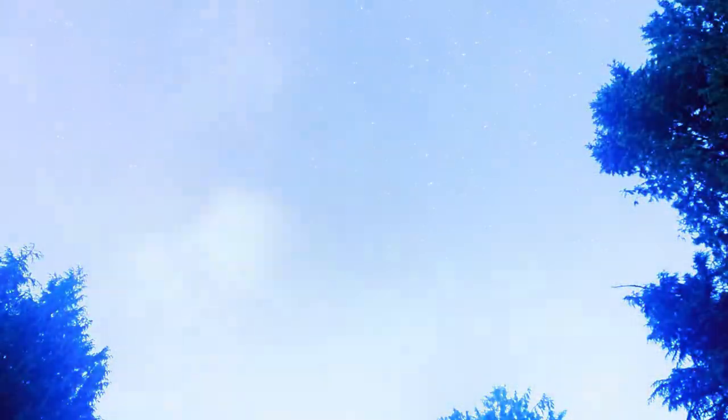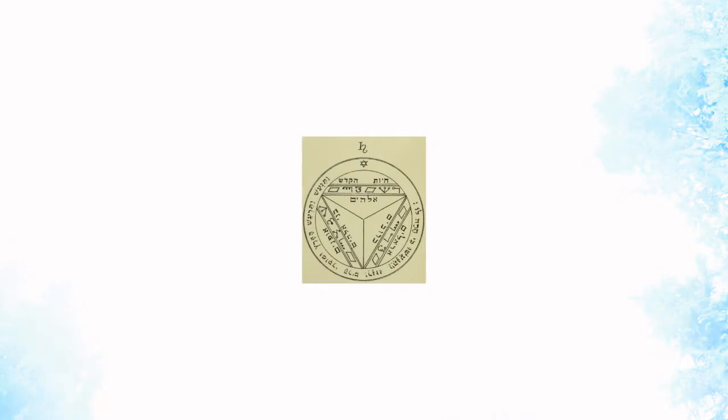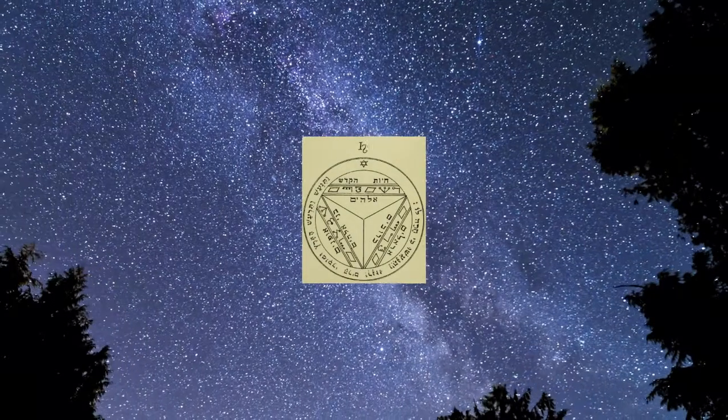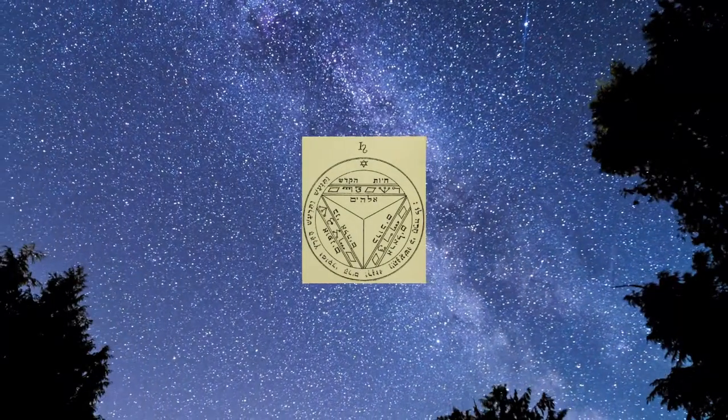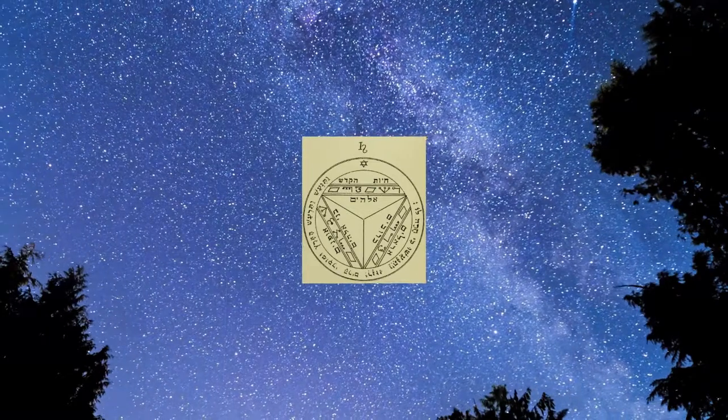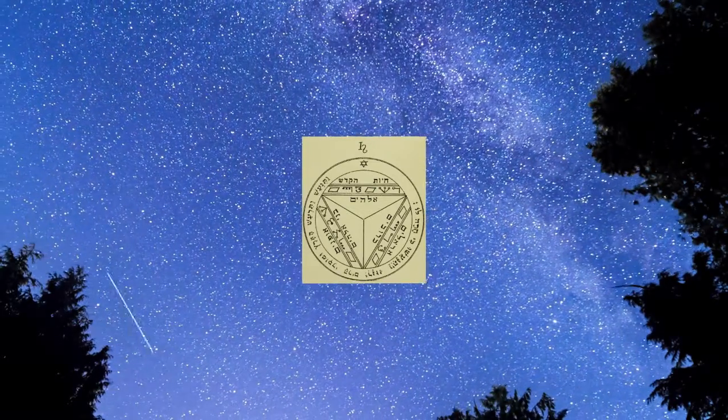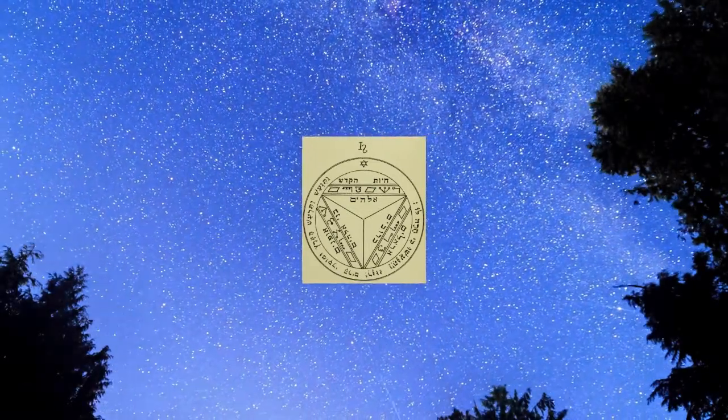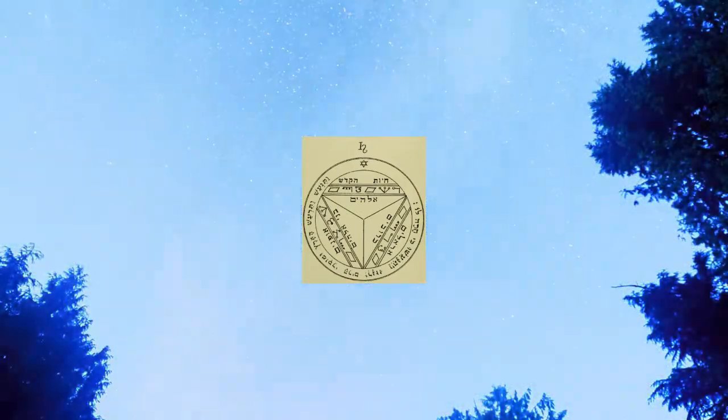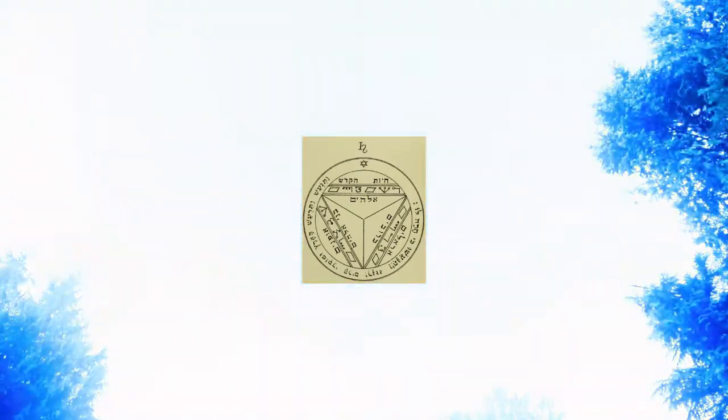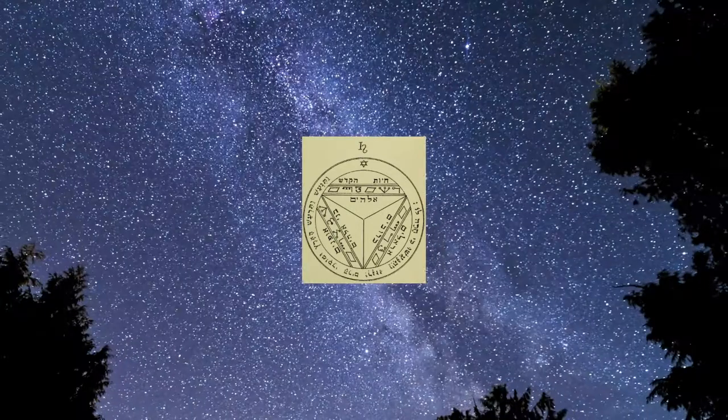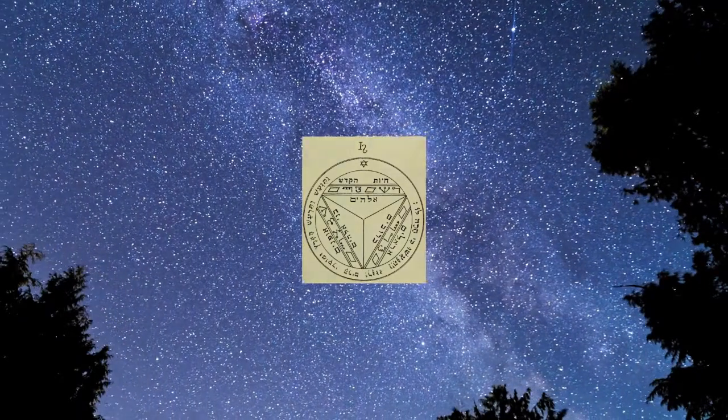The seventh and last sigil of Saturn. This sigil is fit for exciting earthquakes, seeing that the power of each order of angels invoked herein is sufficient to make the whole universe tremble. The verse written is Psalms 18 verse 7: The earth trembled and quaked, and the foundations of the mountains shook. They trembled because God was angry.